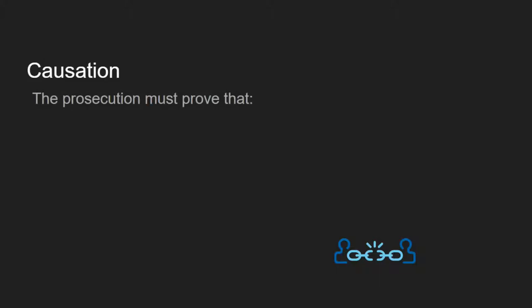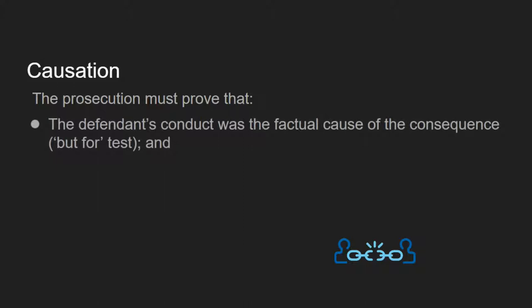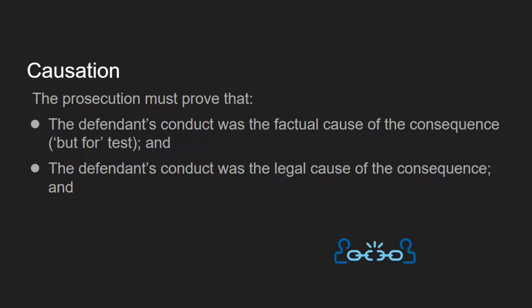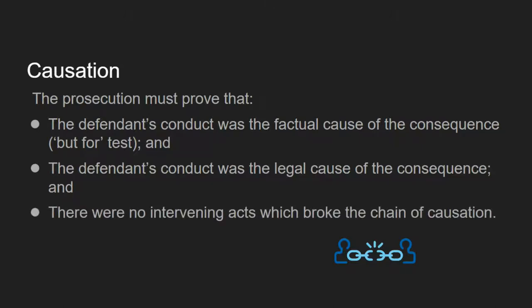When talking about causation there are three things that the prosecution has to prove — a series of tests you need to go through. First, they have to prove that the defendant's conduct was the factual cause of the consequence, and to do this you use something called the but for test, which is the easiest part of causation to prove. In addition, you need to prove that the defendant's conduct was the legal cause of the consequence. Finally, you need to show that there were no intervening acts which could break the chain of causation — known as the chain because of the different links, like the links in a necklace, going from the defendant to the victim.